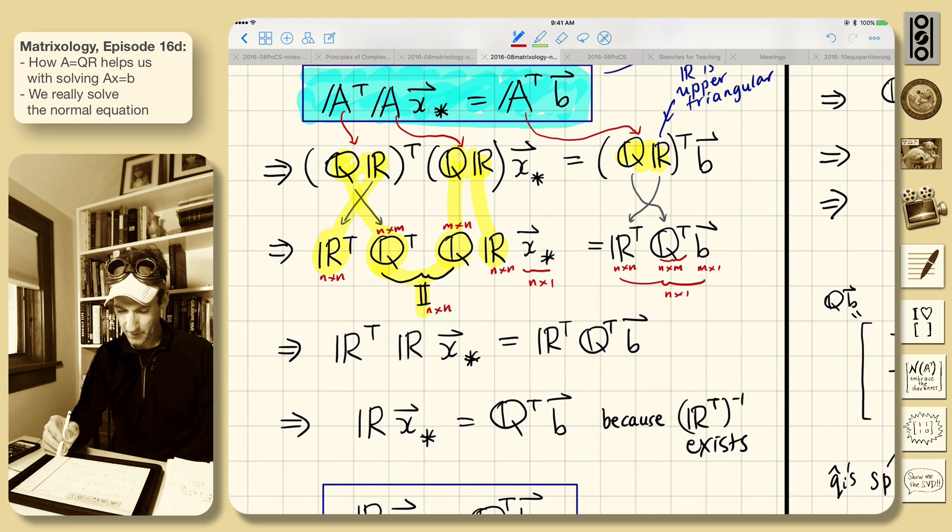Let's get this last piece. So the identity, we can just absorb it. Now we have R transpose R times X star. We've got an R transpose Q transpose over here. Now, there's a sneaky thing here.